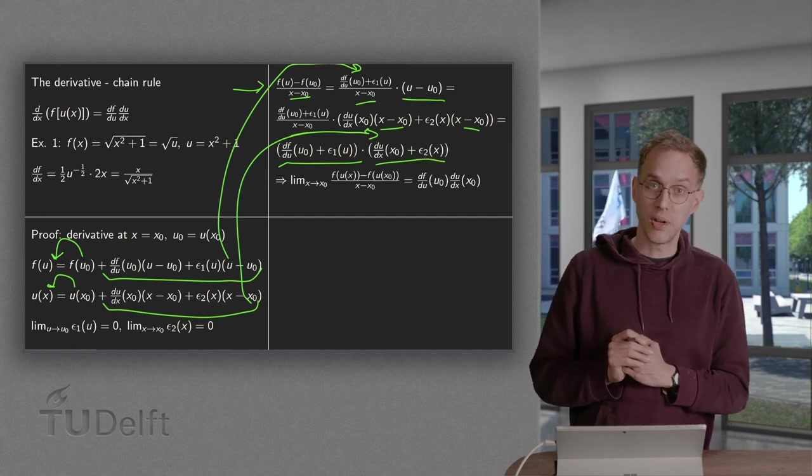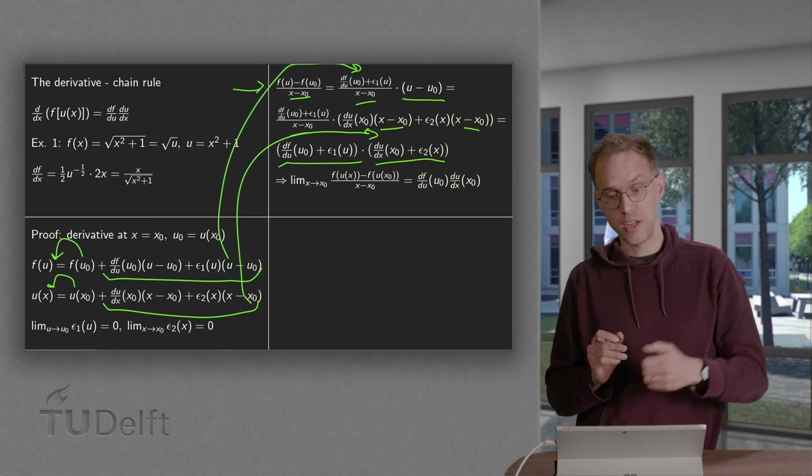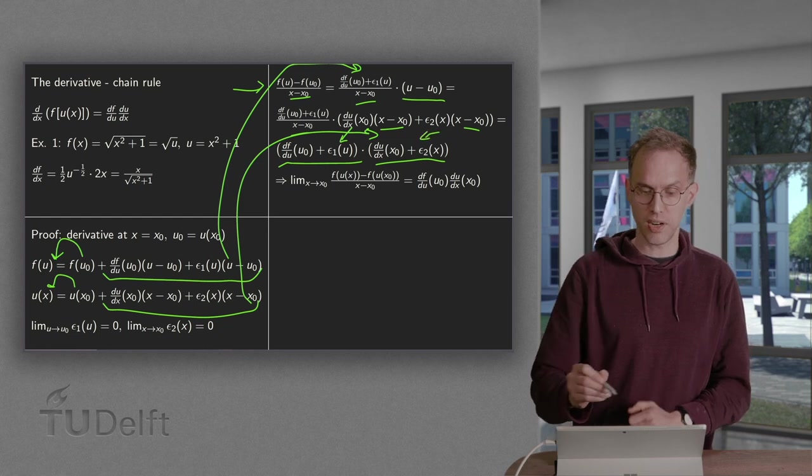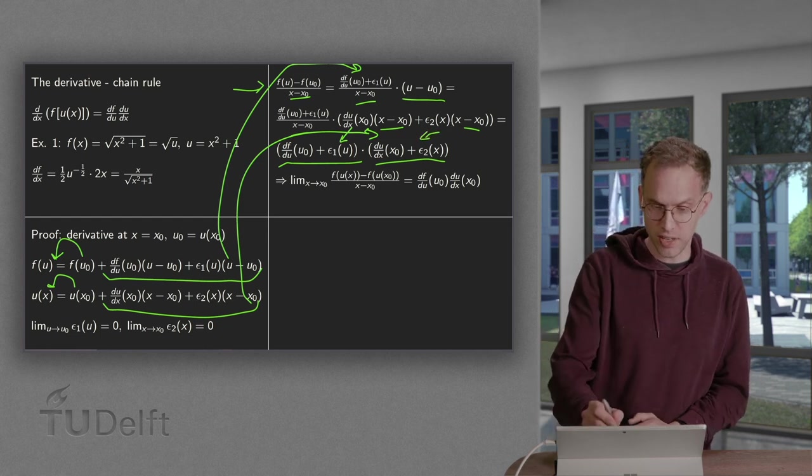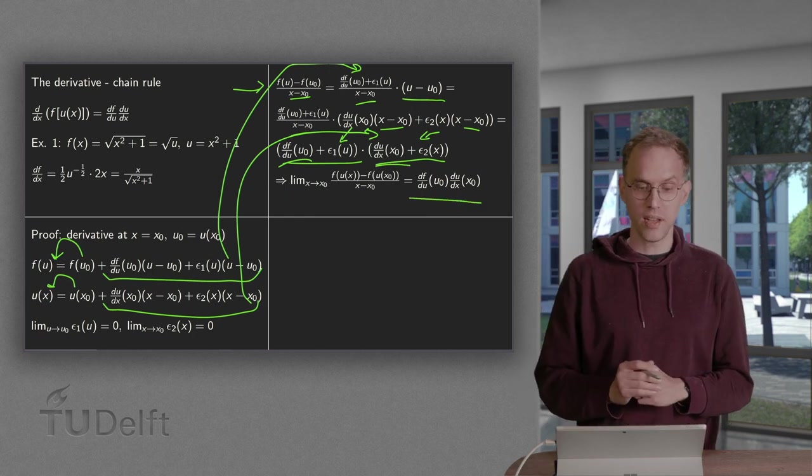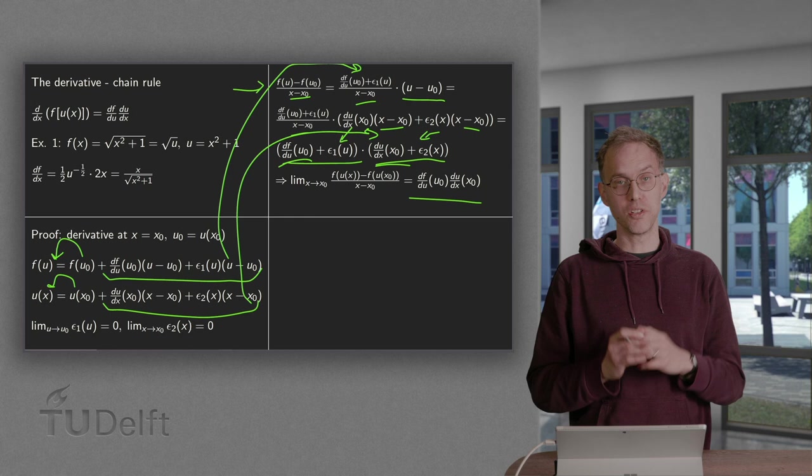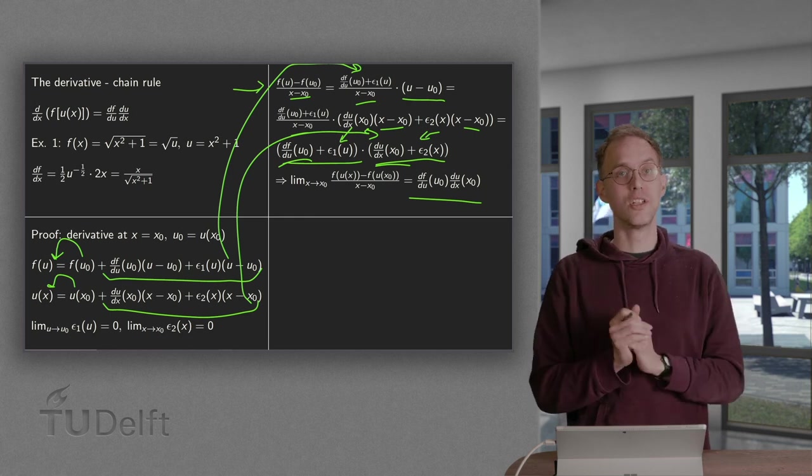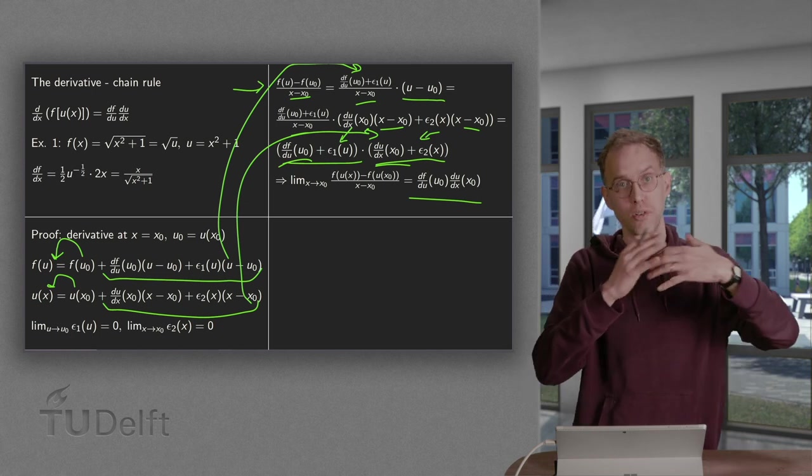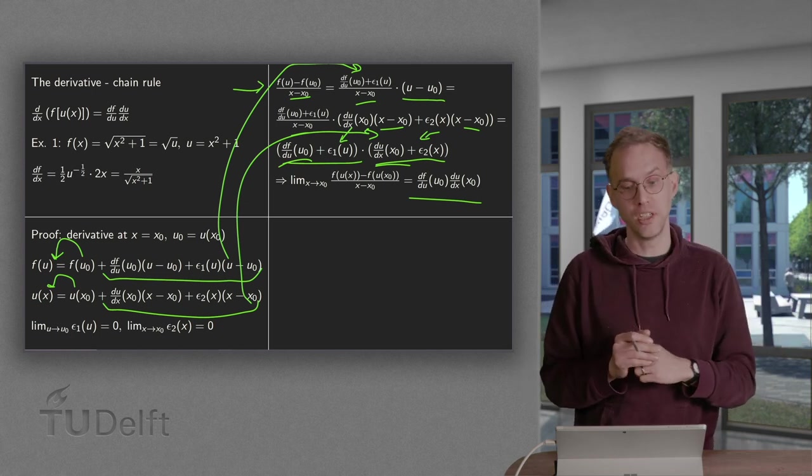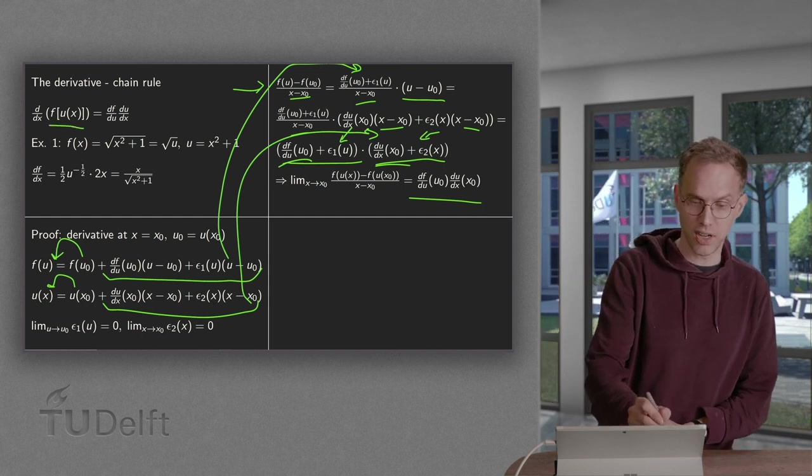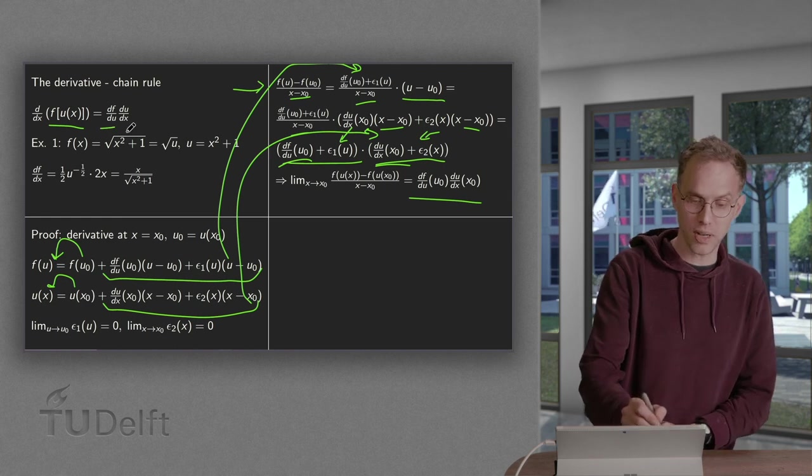Now we send x to x0 which means that we are also sending u to u0. And that implies these two terms in the limit become zero. So what is left is only the df/du at u0 times the du/dx at x0. So there you go. The df/dx equals df/du times du/dx at this specific point. And now of course you can do this for any point. So this holds in general for any u of x combination. So that means that we have our chain rule. The d/dx of f(u(x)) equals df/du at general point times du/dx.